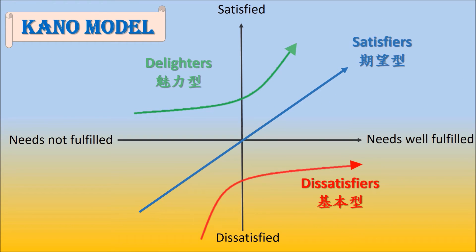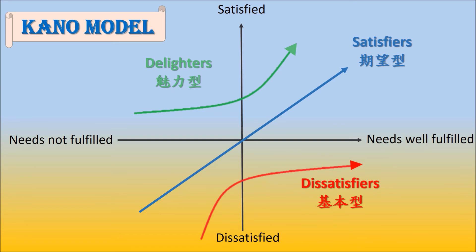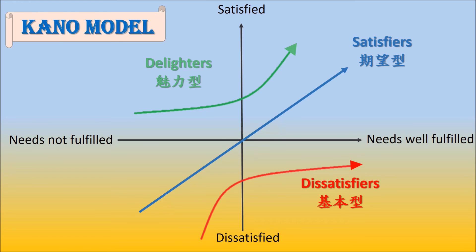There are three types of customer needs: dissatisfiers, satisfiers, and delighters. Dissatisfiers are expected features of a product or service — for example, being on time. If they are not fulfilled, customers will be extremely dissatisfied. Satisfiers are standard features, such as delivery speed; customer satisfaction increases or decreases by their degree. Delighters are unexpected features, such as intimate greetings, and customers will be delighted if delighters are present.